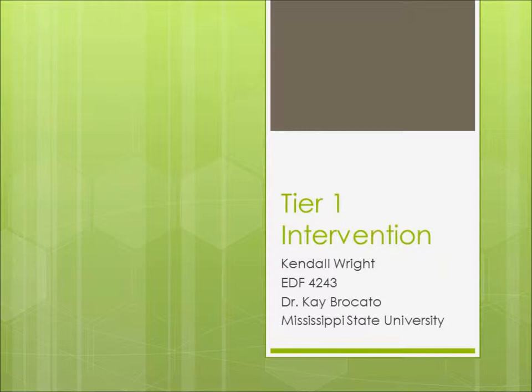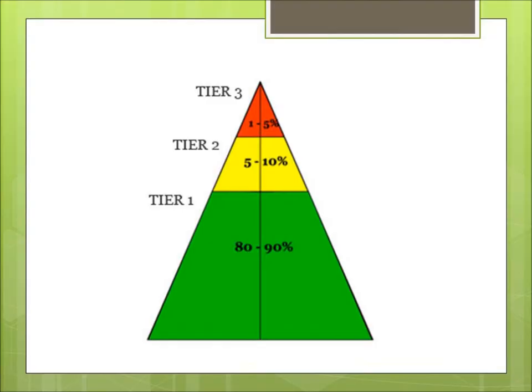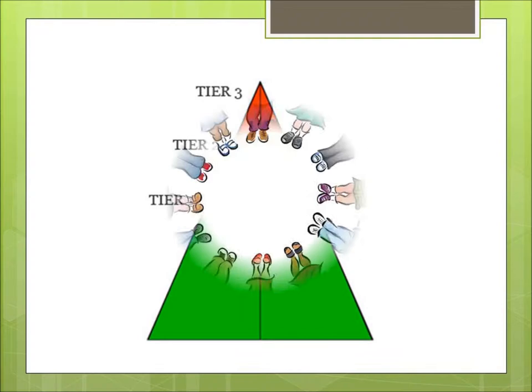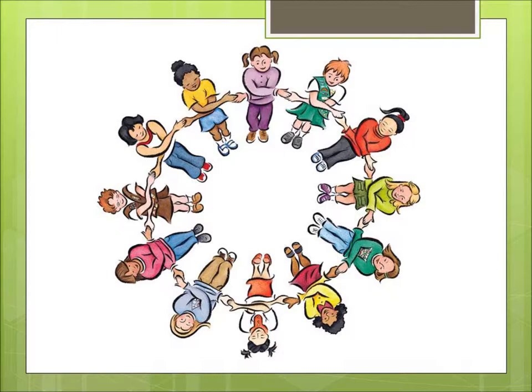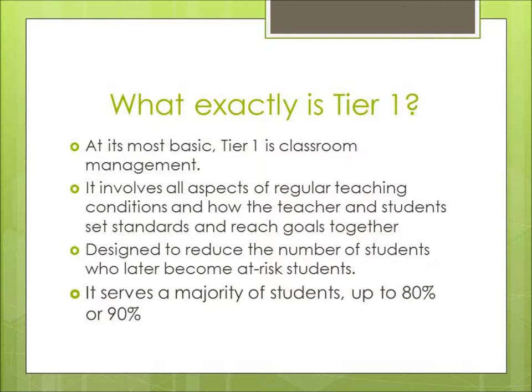Before I go any further, I want to discuss what exactly Tier 1 intervention is. Our education classes here at Mississippi State are full of instruction dealing with Tier 1, Tier 2, and Tier 3. Yet today we will be focusing solely on Tier 1 intervention, simply because it is required for the majority of students who will step foot in our classrooms. At its very most basic, Tier 1 is simply classroom management. It involves all aspects of regular teaching conditions and how teachers and students set standards together and then work towards those goals. It is active instruction meant to reach the average student and therefore reduce the number of students who might later become at risk. Because it serves a majority of students within the classroom, Tier 1 instruction is geared towards a very diverse population.